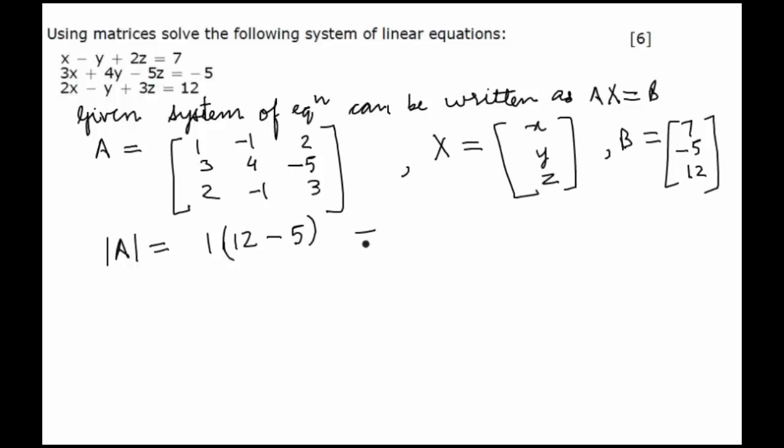This gives a value equal to 4, which is not equal to 0. Therefore A is non-singular, and hence its inverse, A inverse, exists.